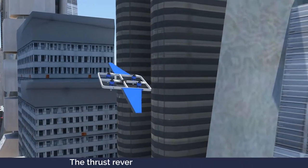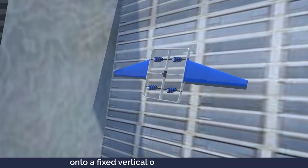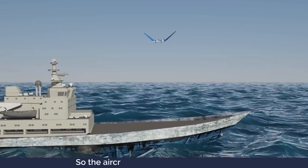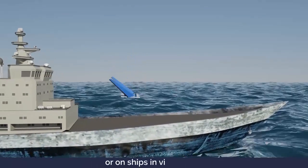The thrust reversal also enables suctioning onto a fixed vertical or horizontal surface. So the aircraft can land on vertical walls or on ships in violent sea.